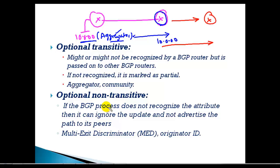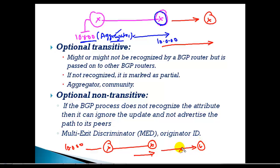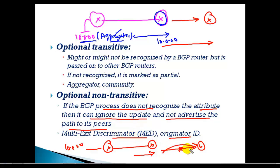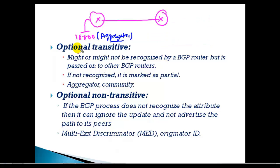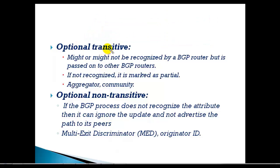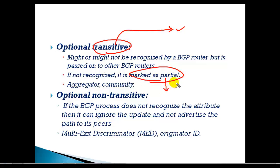In the case of optional non-transitive, if a router does not understand the attribute information it will simply remove that information and not pass it on. Examples include MED and Originator ID. If the BGP process does not recognize the attribute, it will ignore the update and not advertise it to other peers. That is the basic difference between optional transitive and optional non-transitive: transitive still gets advertised even if not understood, marked as partial; non-transitive is simply not advertised.